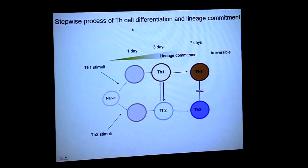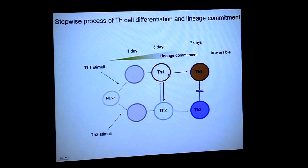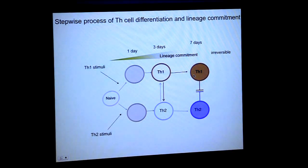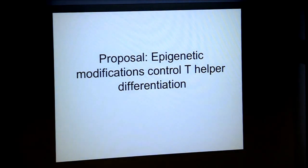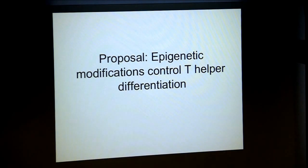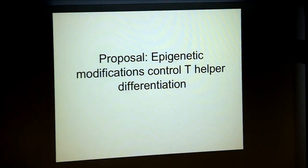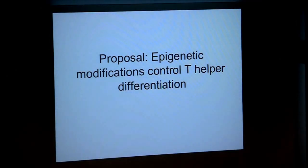At a certain point of differentiation, you have silencing of the opposite lineage: TH1 cells will silence TH2 genes, whereas TH2 cells will silence TH1 genes. This seems to happen over time as a stepwise process. After three days cells can be looking TH1 and upregulate TBET, or become TH2 at intermediate time points. But later, once past a week or two weeks, you have a relatively irreversible cell type almost fully committed to a lineage. Given this heritable silencing or activation phenotype over cellular differentiation, there have been many proposals about epigenetic modifications controlling T helper cell differentiation.